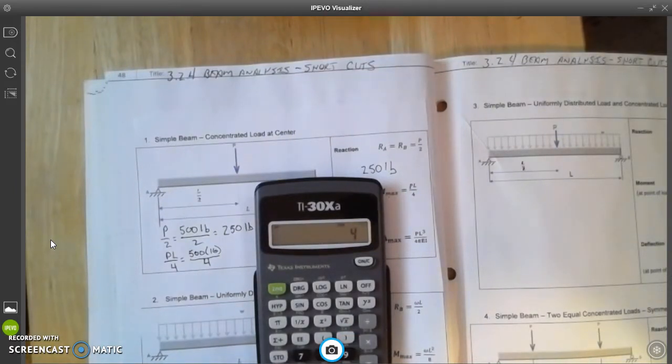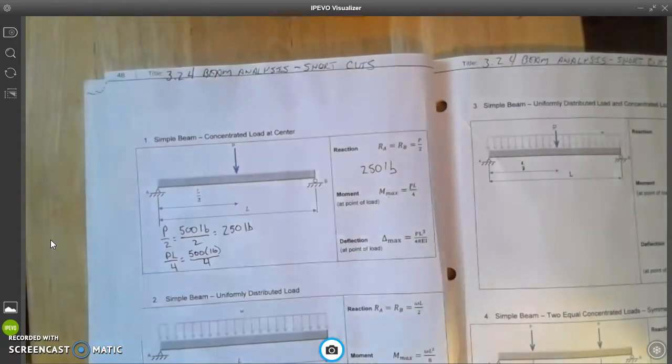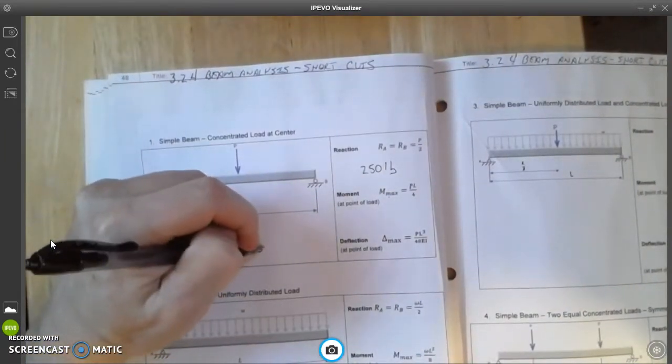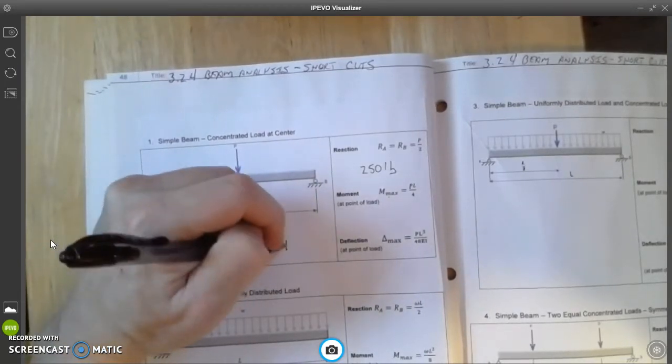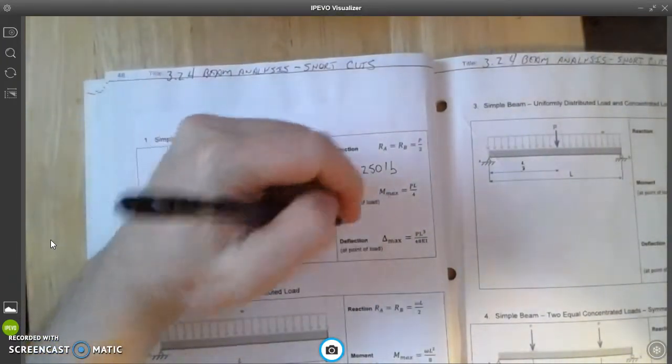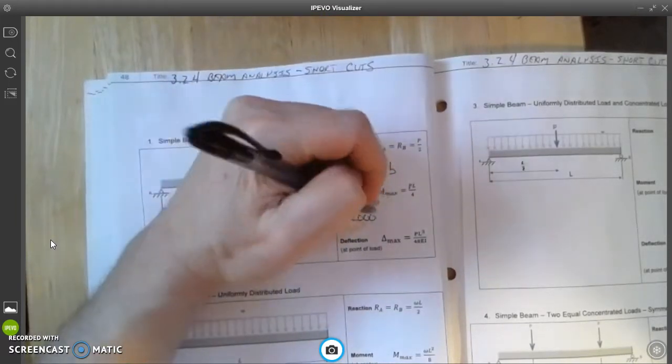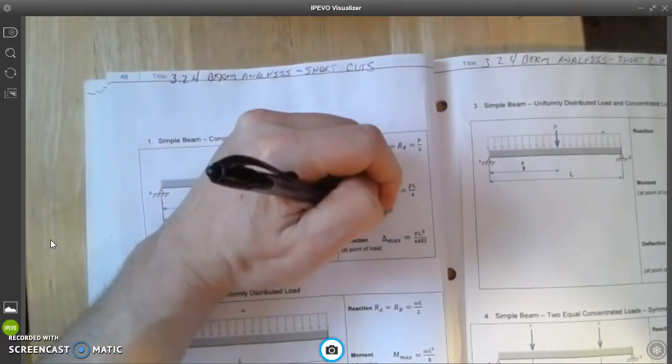Equals, divided by 4, and that equals 2,000 foot-pounds. So I'll write that over here under moment - 2,000 foot-pounds.